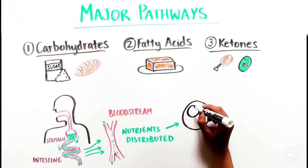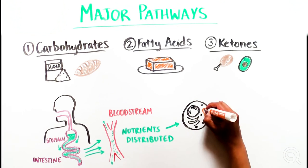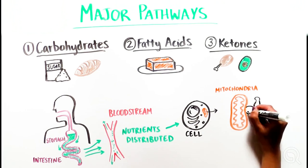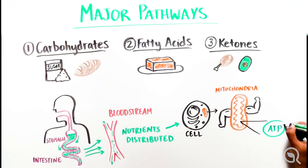Once inside the cell, the broken-down products of nutrients are used to fuel production of ATP. This can happen both inside and outside the mitochondria, an organelle famous for being the powerhouse of the cell.